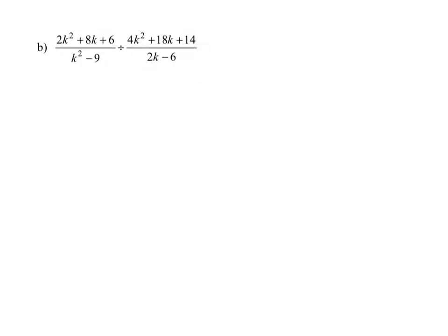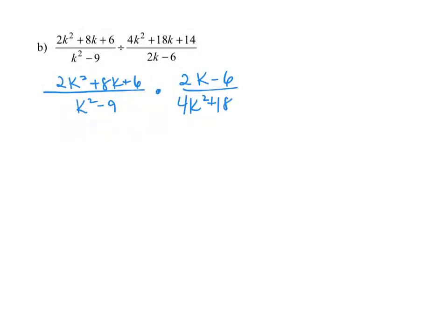Let's change this division problem to a multiplication problem, then factor each numerator and denominator. In the first fraction, 2k squared plus 8k plus 6 is in the numerator and k squared minus 9 is in the denominator. We change division to multiplication and write 2k minus 6 in the numerator and 4k squared plus 18k plus 14 in the denominator. In the first numerator, there's a greatest common factor of 2, giving us 2 times the quantity k squared plus 4k plus 3. The denominator k squared minus 9 is a difference of squares, factoring into k plus 3 and k minus 3.